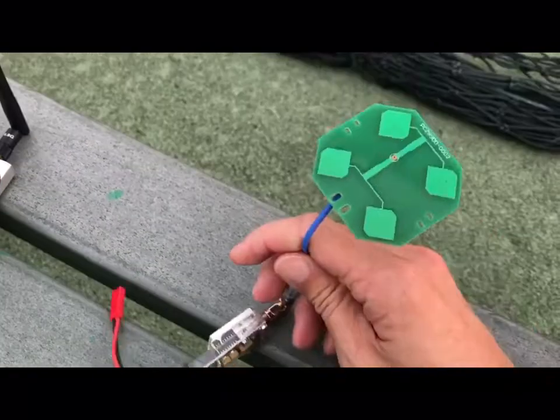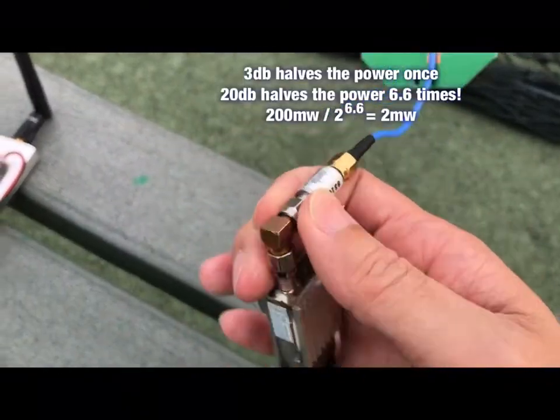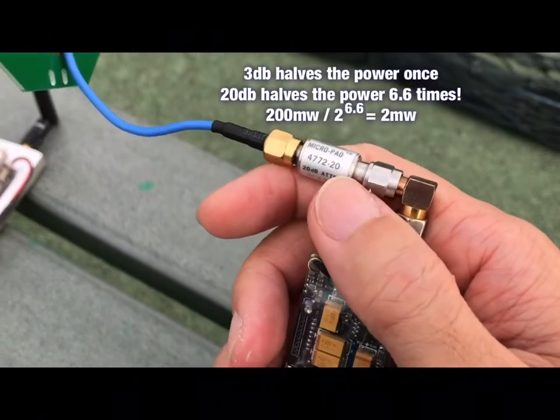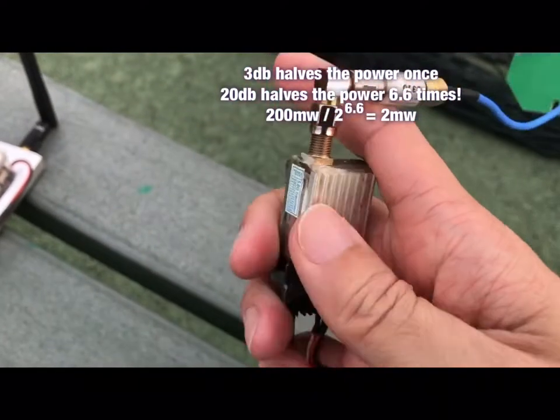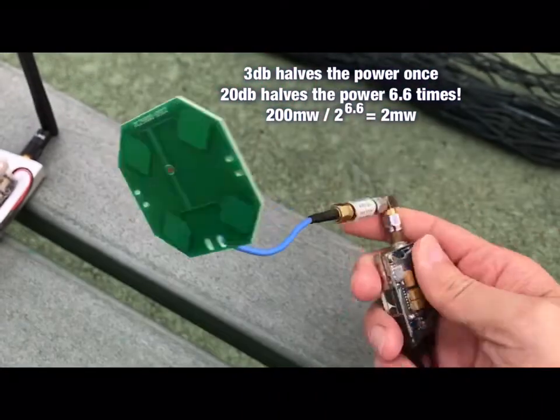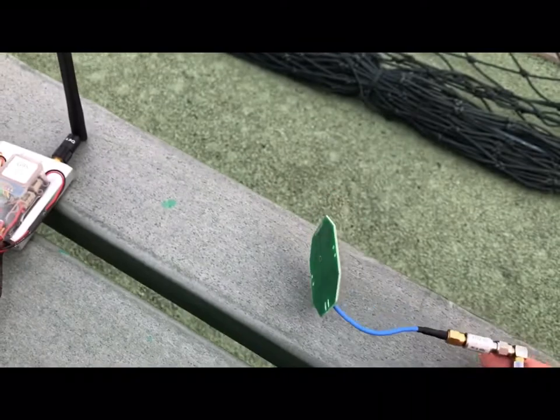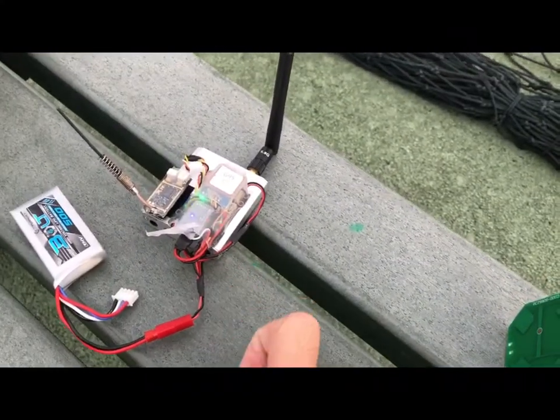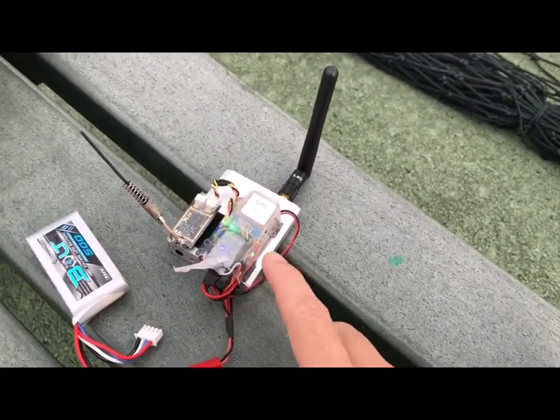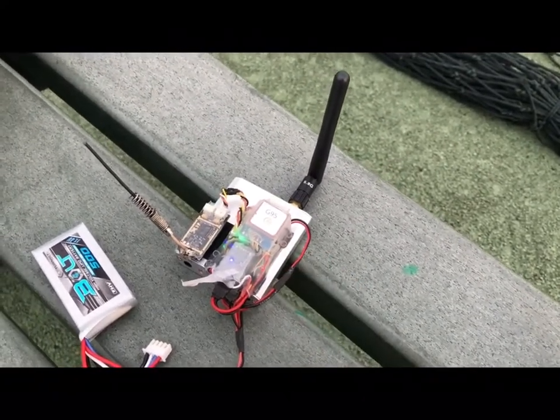As you can see here, there's a 20dB attenuator. This reduces the 200mW to a mere 2mW of transmission power. This means that I do not have to travel very far, or rather this unit doesn't have to travel very far, to be able to plot the signal strength or the antenna pattern of the patch.